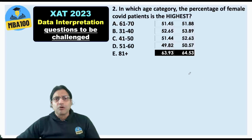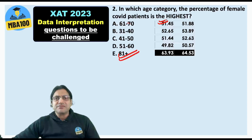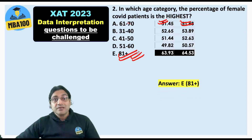If we ignore the erroneous part shown in red and look at question 2 — 'In which age category is the percentage of female COVID patients the highest?' — the answer is 81 plus. In the 61–70 category, the minimum percentage is 51.45%. Since there are also some unknown-gender patients, if all of them turn out to be female, we get a range. The answer is clearly option E. But the main trunk data itself is incorrect.